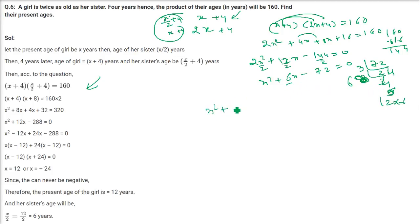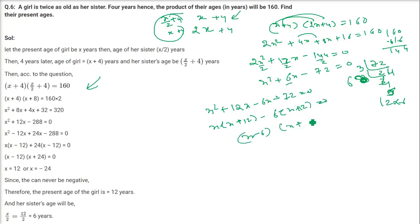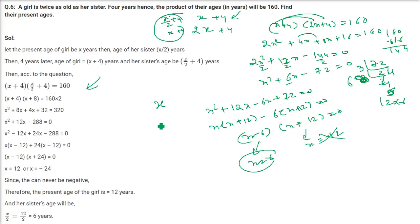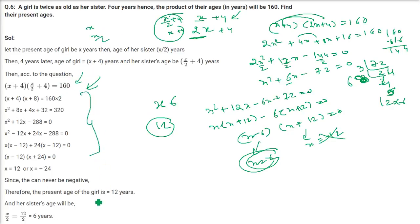So X squared plus 6X minus 72 equals zero, which can be written as X squared plus 12X minus 6X minus 72 equals zero. Taking X common gives X plus 12, taking minus 6 common gives X plus 12. So the factors are X minus 6 and X plus 12, giving X equals 6 or X equals minus 12. Age cannot be negative, so X equals 6. Therefore the sister's present age is 6 and the girl's present age is 12.